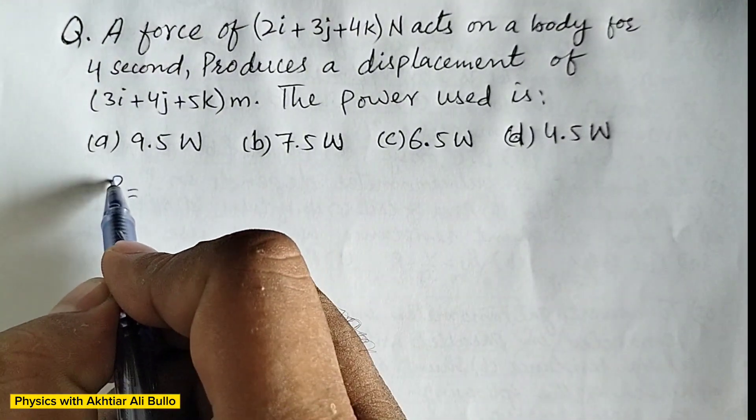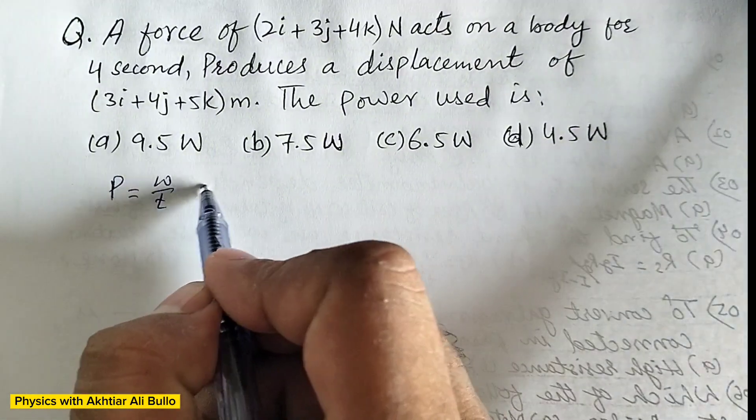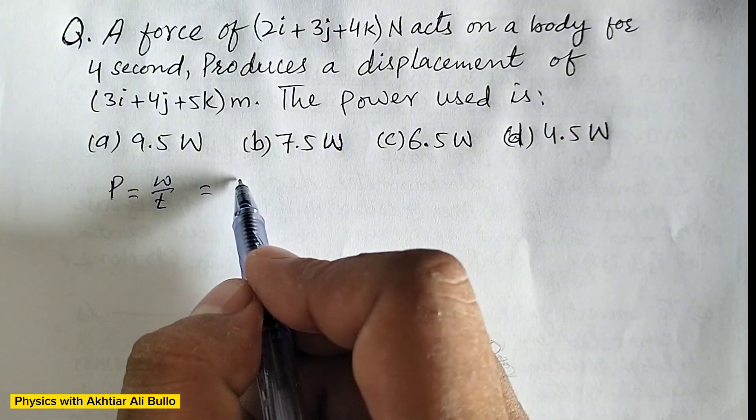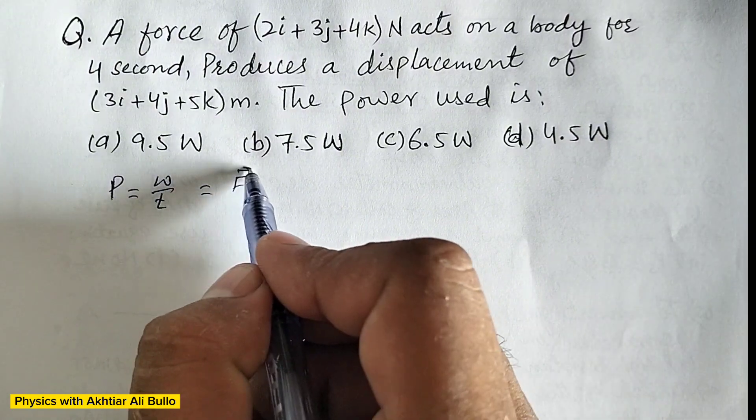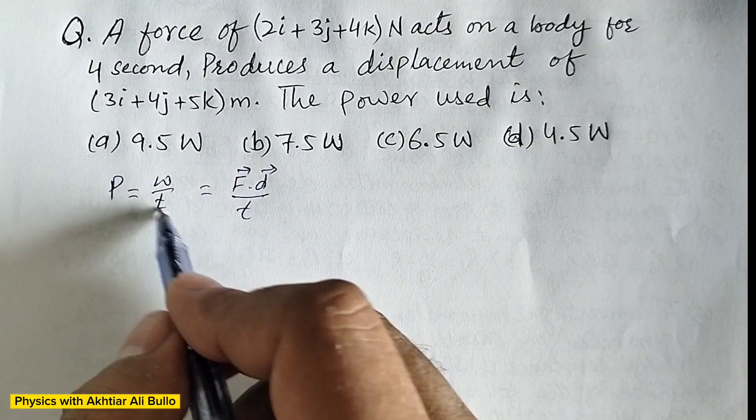Power is calculated by using formula P is equal to work upon time. As work is the dot product of force and displacement upon time.